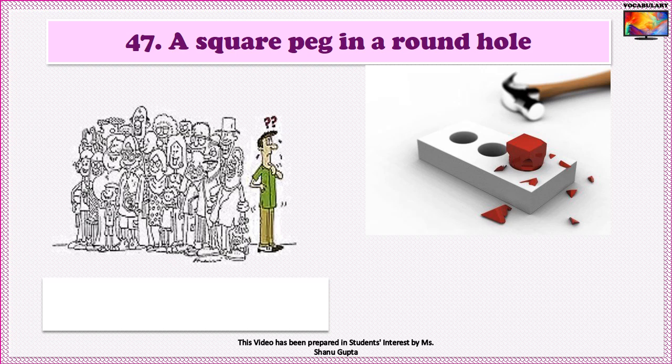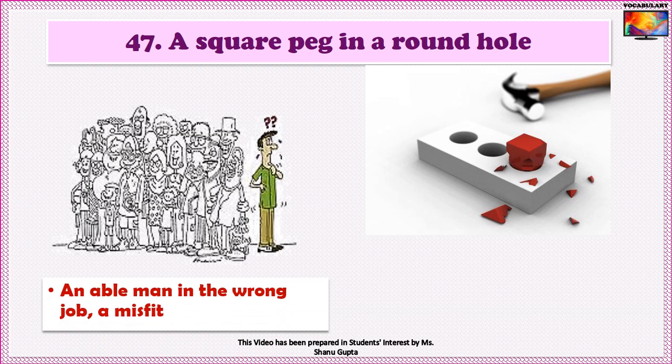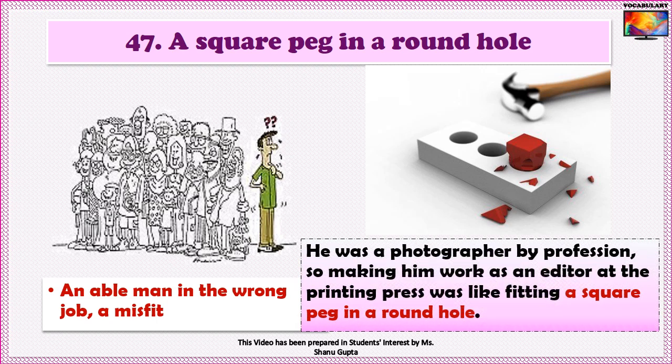Next idiom is A square peg in a round hole, which means to try to combine two things that do not belong or fit together. This idiom denotes an able man in the wrong job — a misfit. An example: He was a photographer by profession, so making him work as an editor at the printing press was like fitting a square peg in a round hole.